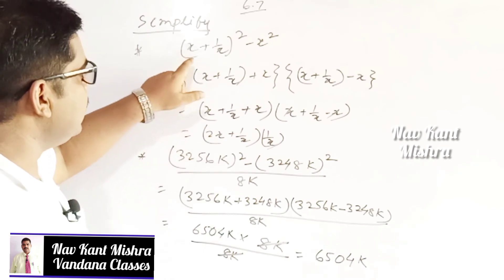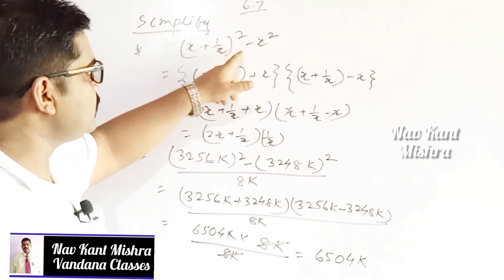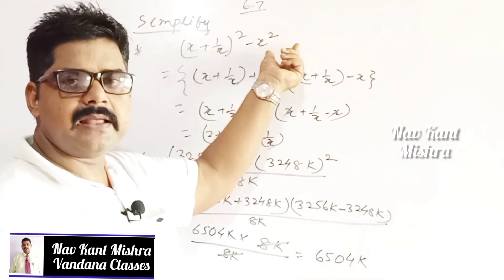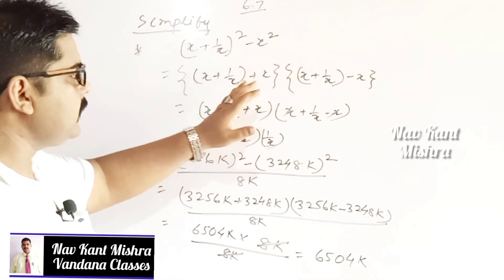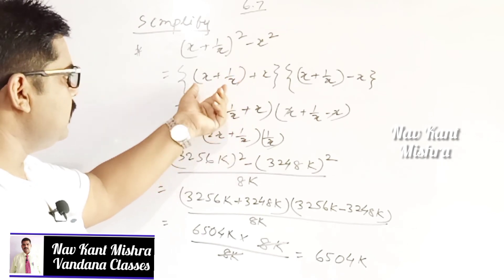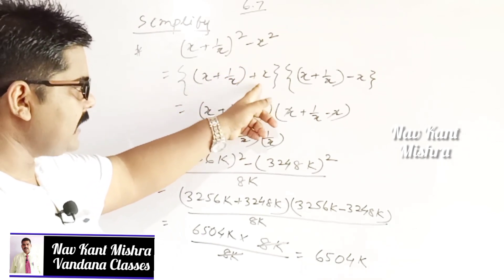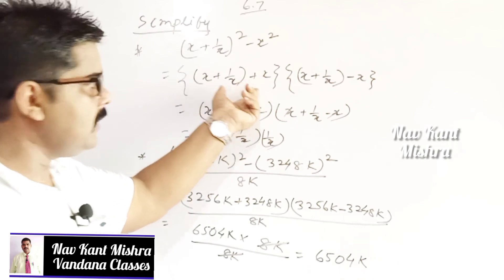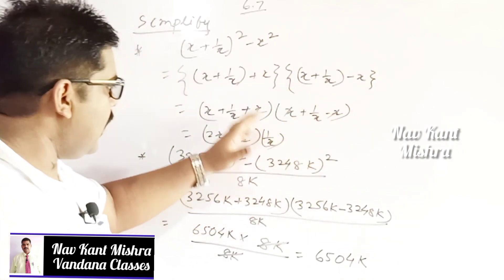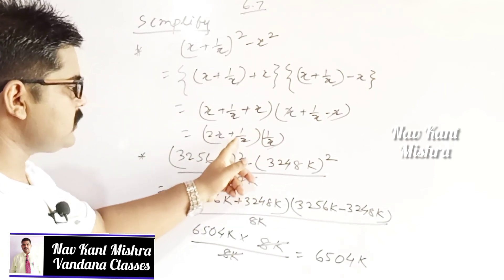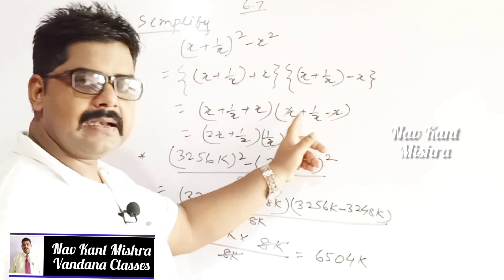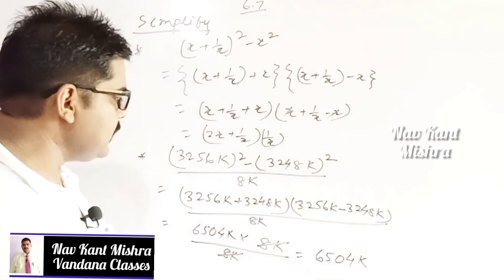My dear student, consider x plus 1 upon x whole square minus x square, where x plus 1 upon x is considered as a and x as b. Applying the formula a plus b into a minus b: a plus b is x plus 1 upon x plus x, and a minus b is x plus 1 upon x minus x. On simplification, you get 2x plus 1 upon x into 1 upon x, since x and minus x cancel.